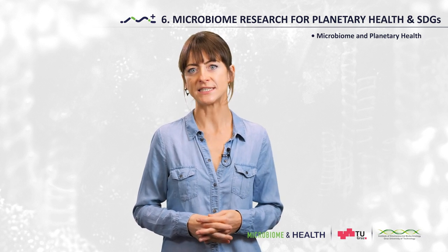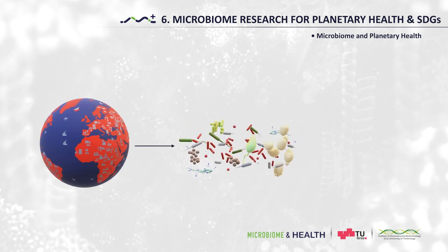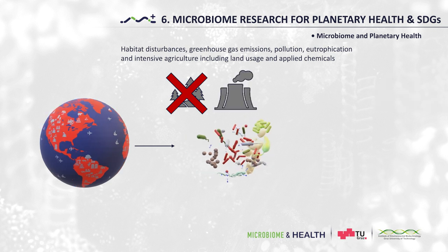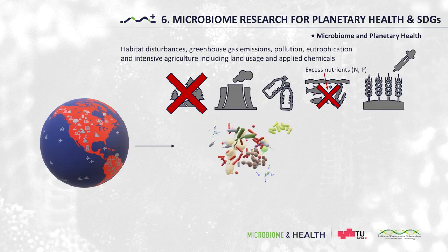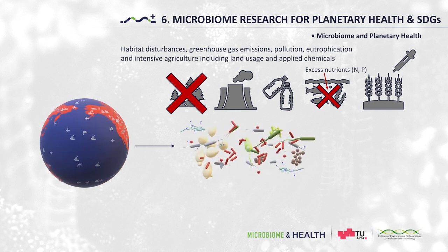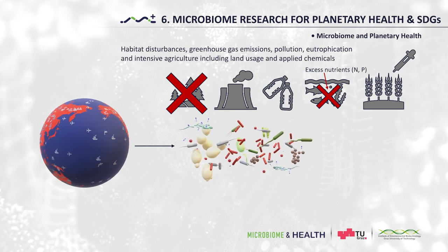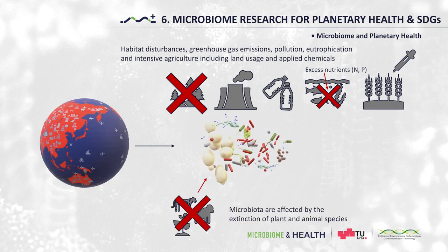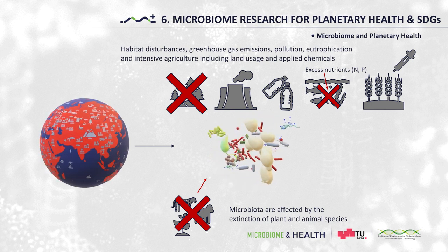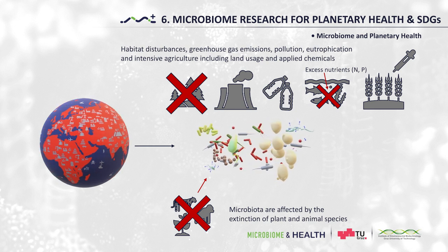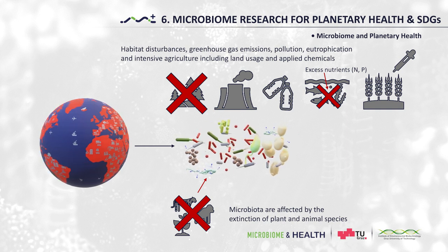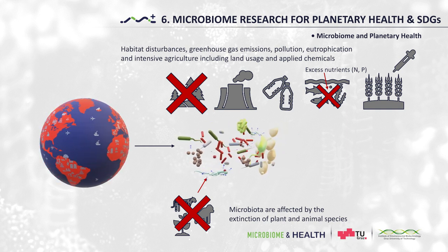Human activity can affect the Earth microbiota both directly and indirectly. Directly by habitat disturbances, greenhouse gas emission, pollution, eutrophication and intensive agriculture, including land usage and applied chemicals. Indirectly, microbiota are affected by the extinction of plant and animal species. As you already know, each higher organism is closely associated with its microbiota, and there are several that are specific and uniquely associated with a particular plant or animal species. If this species goes extinct, also its microbes are probably lost forever.